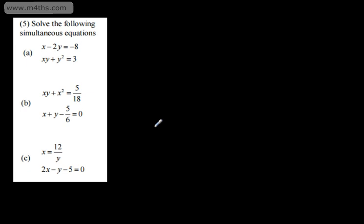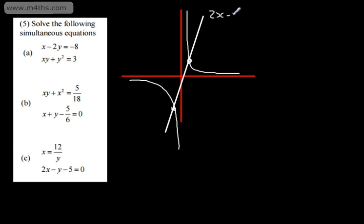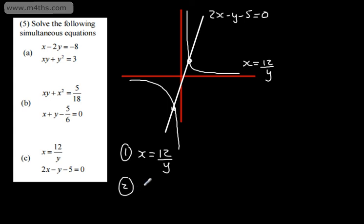Let's look at the last one. We've got x equal to 12 over y, and 2x minus y minus 5 equals 0. I'm going to sketch this to show roughly what's going on. We're going to have a reciprocal function like that, and then we're going to have a linear function. So we're going to have two points of intersection. The line is 2x minus y minus 5 equals 0, and this is x equals 12 over y. I'm going to substitute equation 1 directly into equation 2, giving 2 times 12 over y, minus y, minus 5, equals 0.